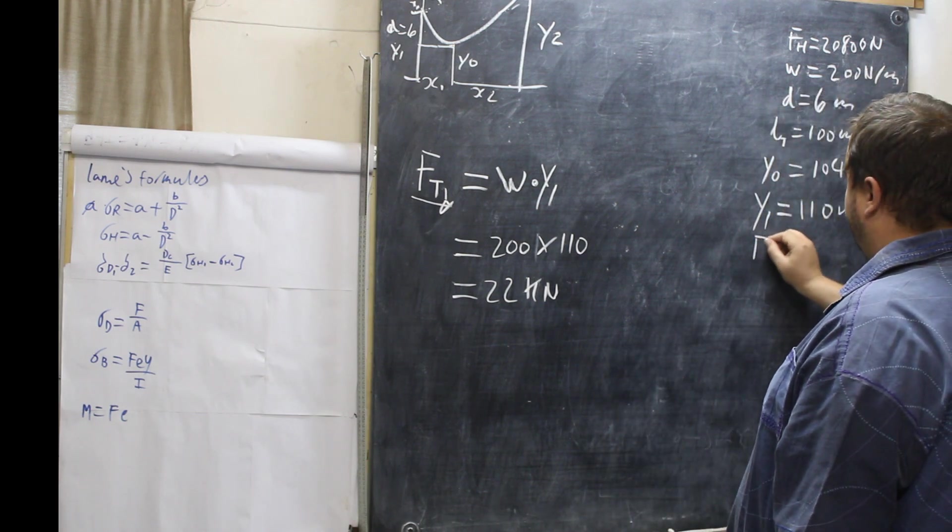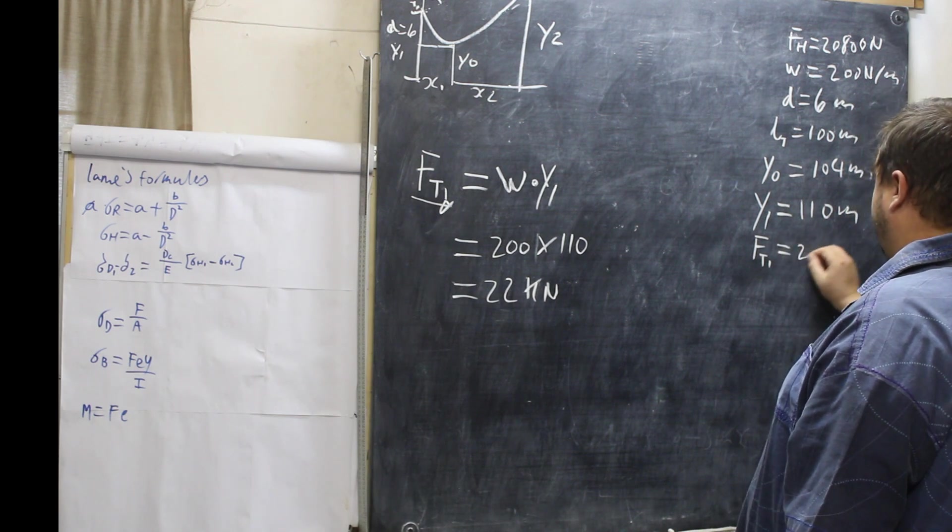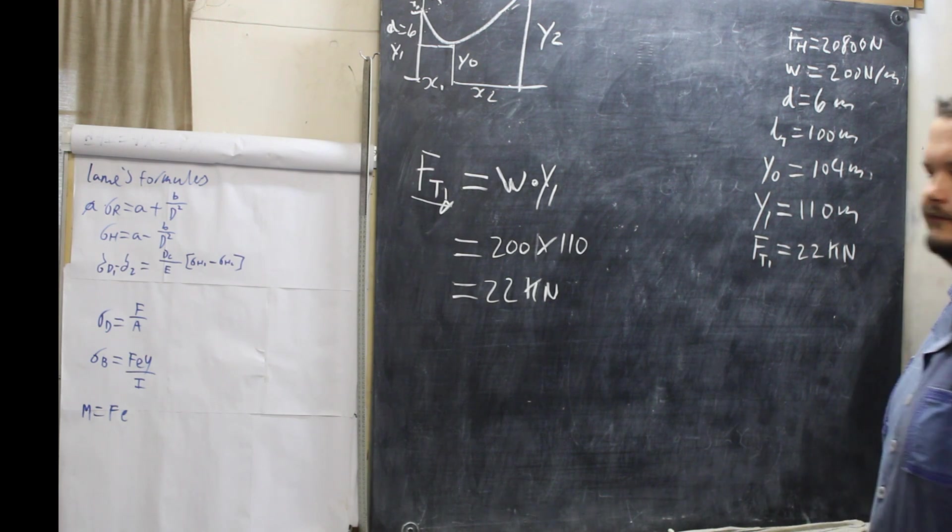So, that is W times Y1. So, we have 200 newtons per meter, 200 times Y1 which is 110. So, 200 times that is 22 kilonewtons. So, this is what we're looking for. We're looking for this tension here. So, that's our final answer. FT1 equals 22 kilonewtons.